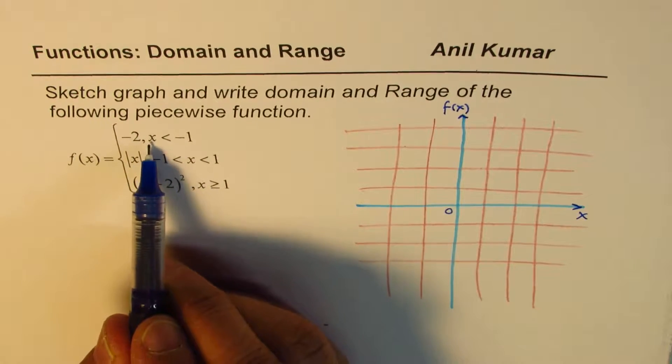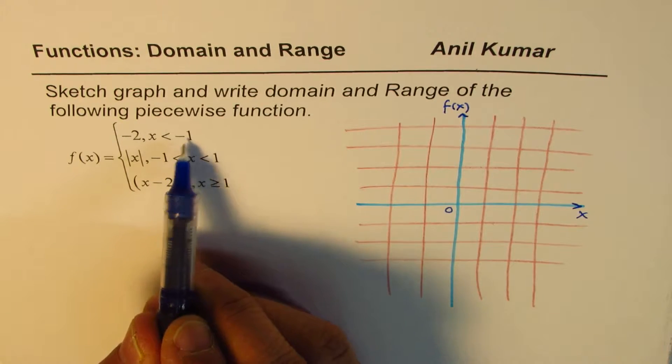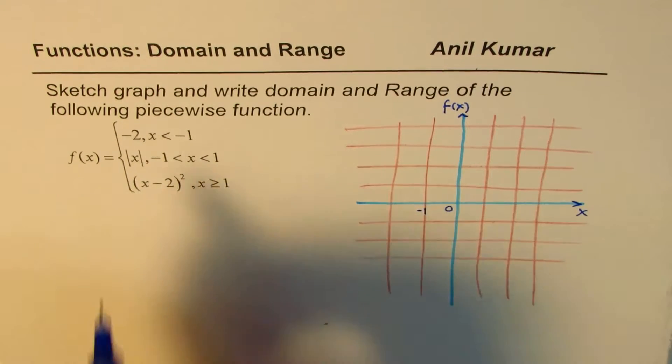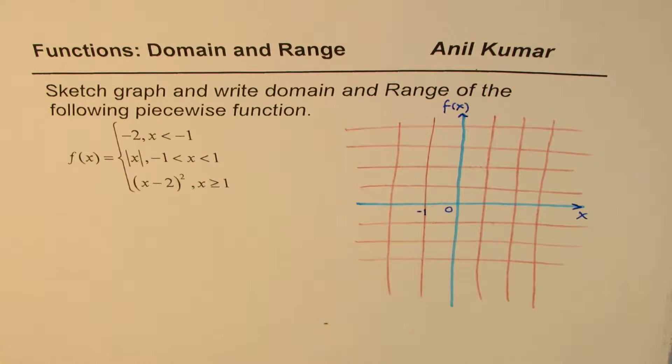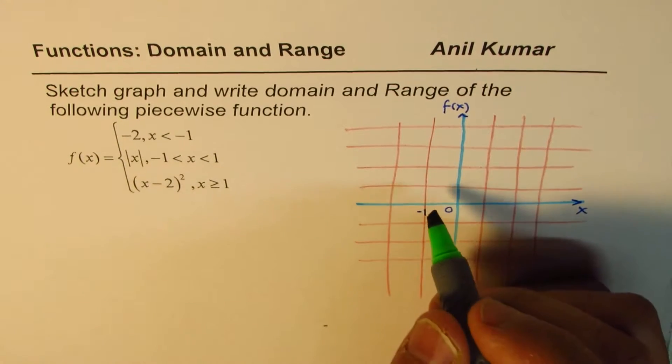Now, first part is that when x is less than minus 1, that means this is minus 1 for us, then the value is minus 2. That really means that, let me sketch with a colored pen.